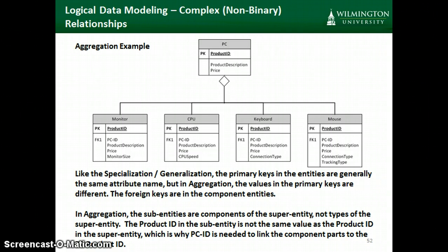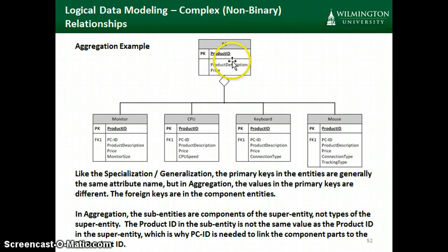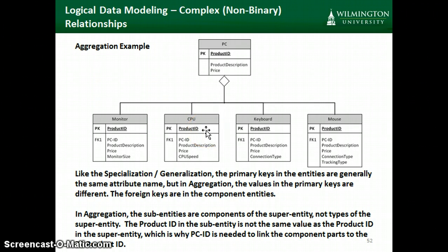Another way we can set up the data is the aggregation example. It looks pretty similar to the subtype example, but it means something different. In the subtype example, all of the subentities are different types of the superentity. In the aggregation example, they are different components of the superentity. As I mentioned, we could buy a fully assembled PC that comes with a monitor, a CPU, a keyboard, and a mouse, or we could buy each of these components individually. Each component would have a product ID designated for that component, and if we wanted to indicate that component was part of the fully assembled PC, we would need a PC ID in the component to link back to the product ID in the superentity.